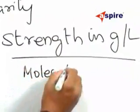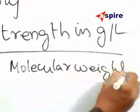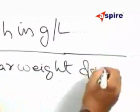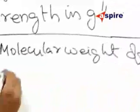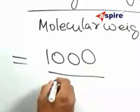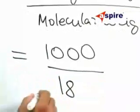The molecular weight of the substance here means the molecular weight of water. That is equal to 1000 divided by molecular weight of water is 18.